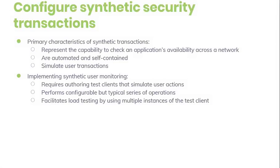Now we come to our last topic in this video. Distributed applications and services running in the cloud are by their nature complex — pieces of software comprising many moving parts. In the production environment, it is important to be able to track the way in which users utilize your system, track resource utilization, and monitor the health and performance of your system. You can use this information as a diagnostic aid to detect and correct issues, and to help spot potential problems and prevent them from occurring.